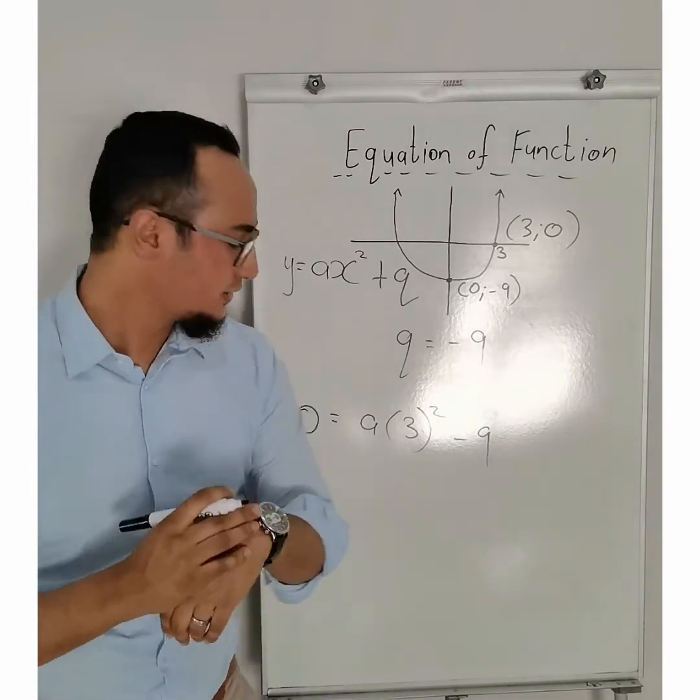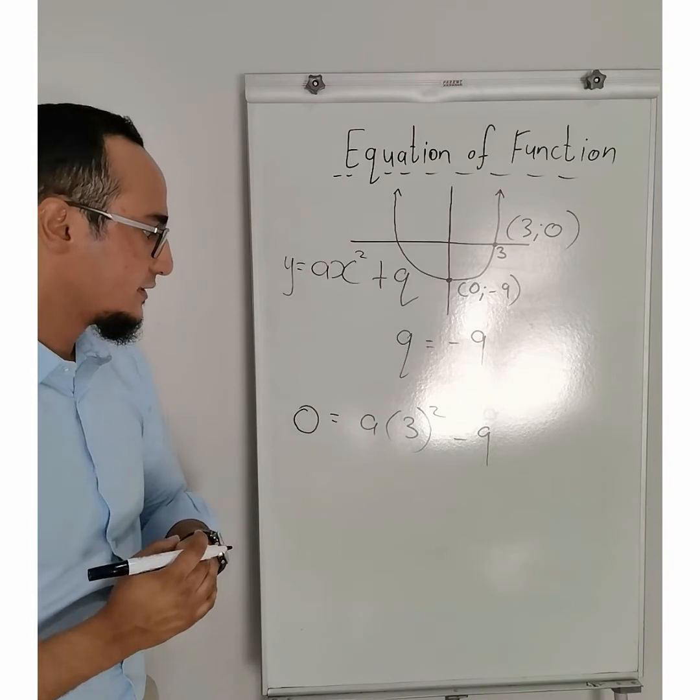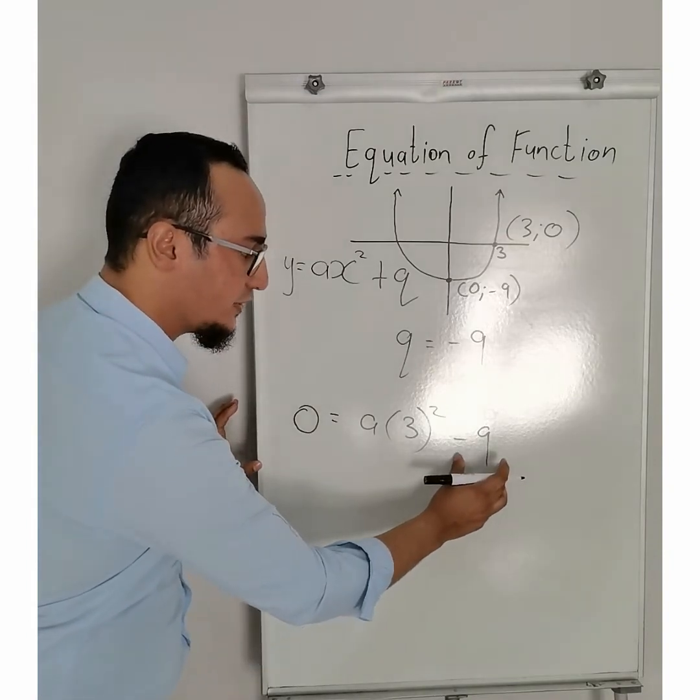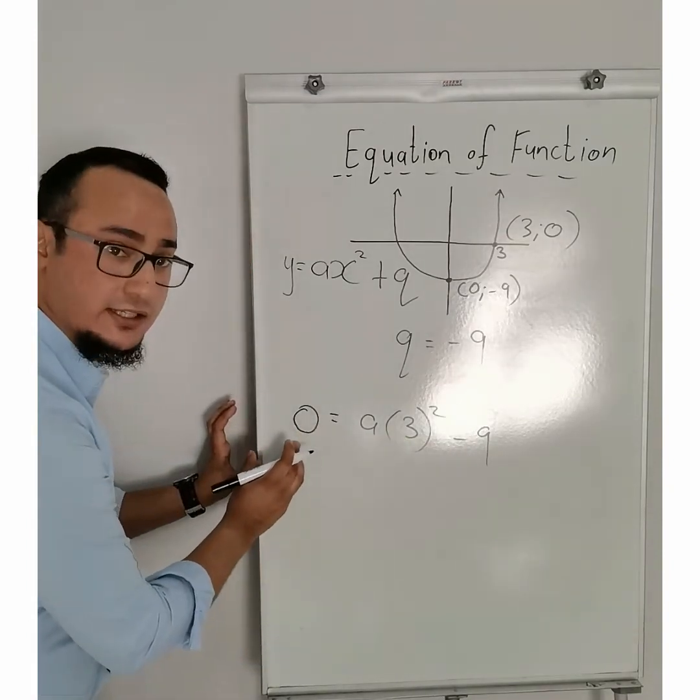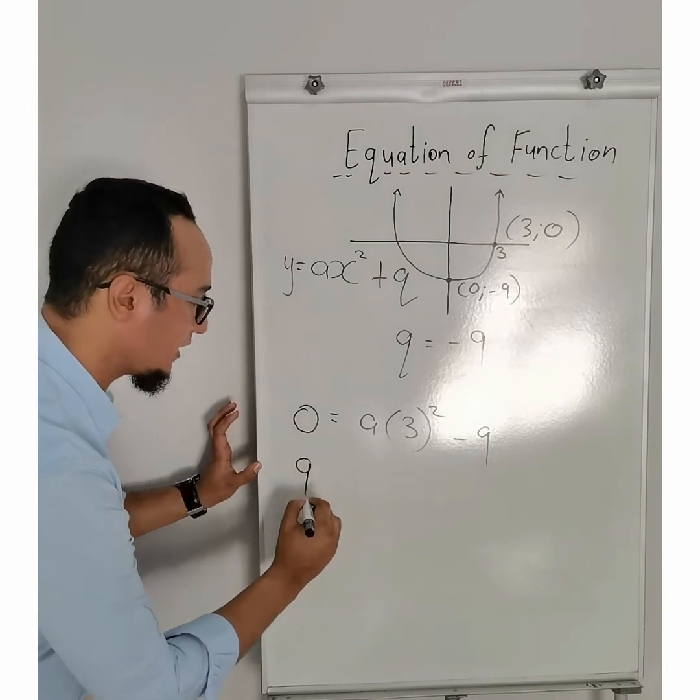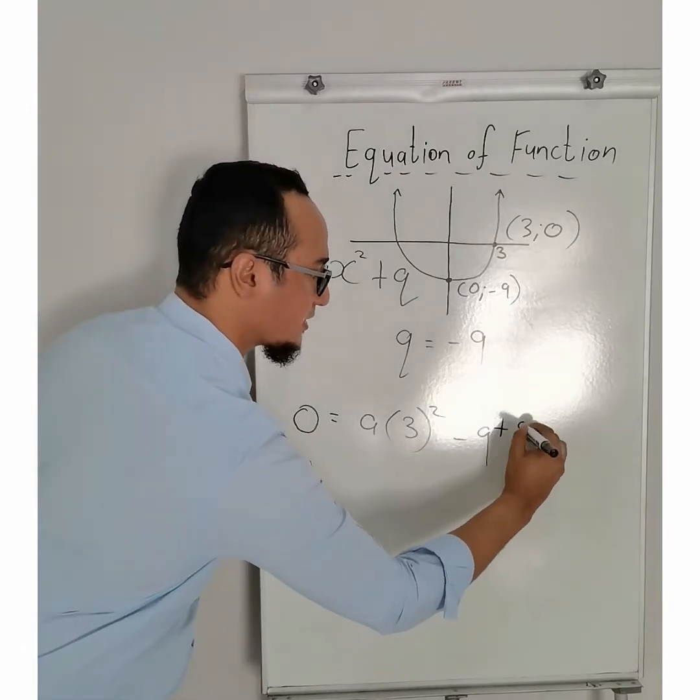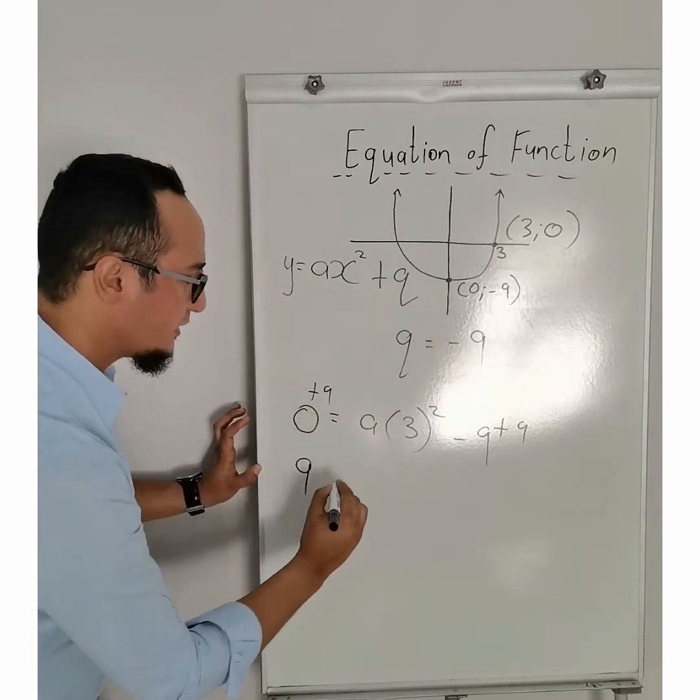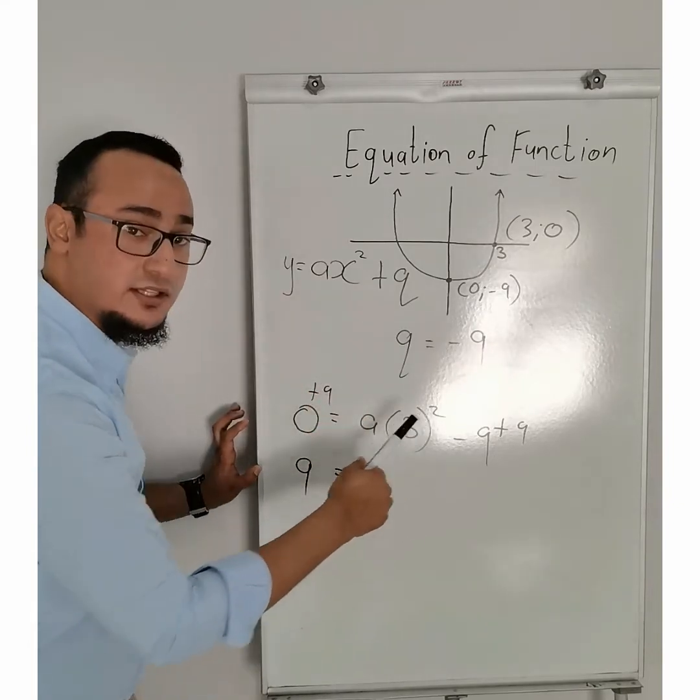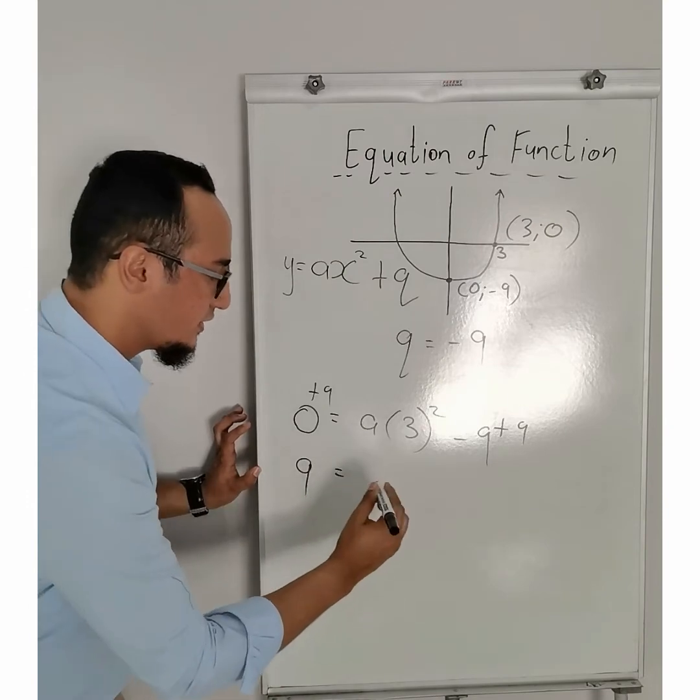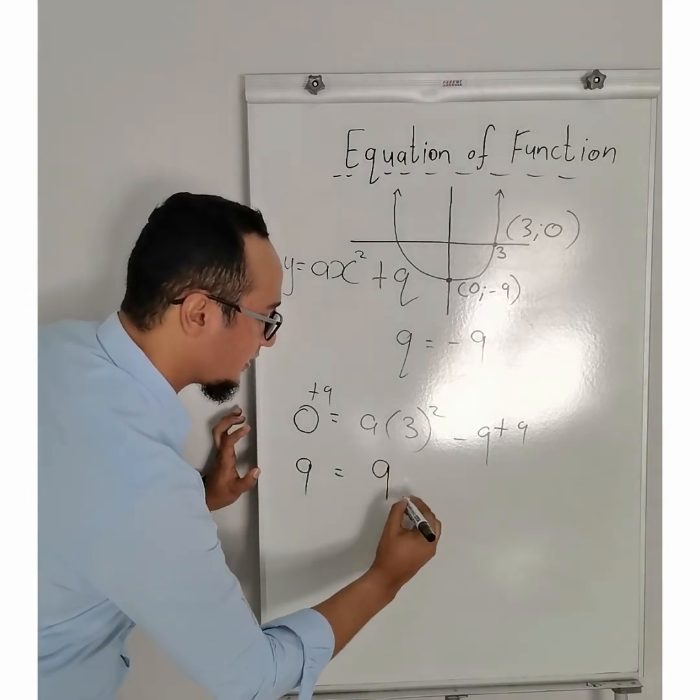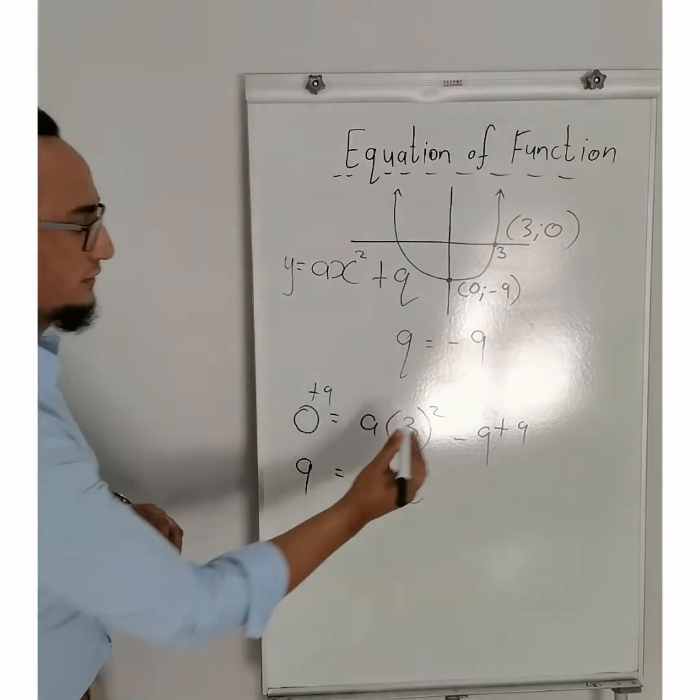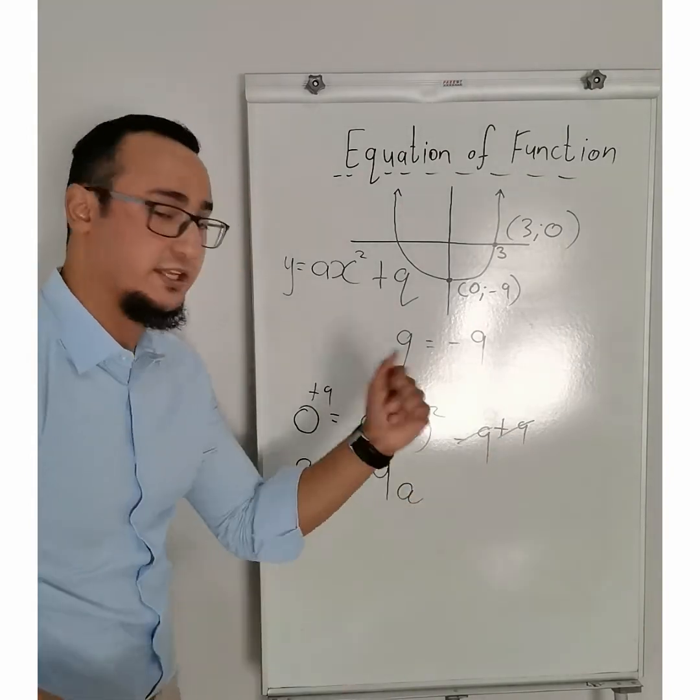So, over here, I need to now solve for a. So, if I have negative 9 over here, on this side, it's going to be positive 9, because inverse operation plus 9, what I do on the right-hand side, I need to do on my left-hand side, is equal to 3 squared, is equal to 9. 9 times a is equal to 9a. So, remember these two, they make 0.